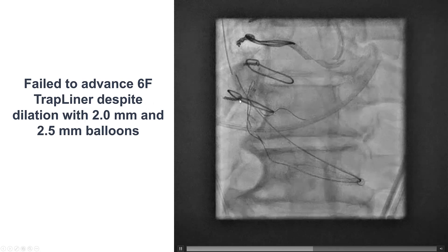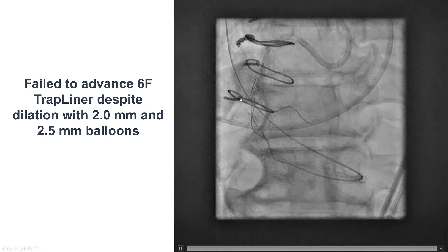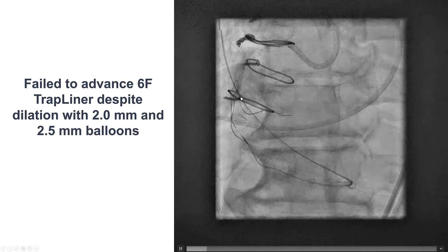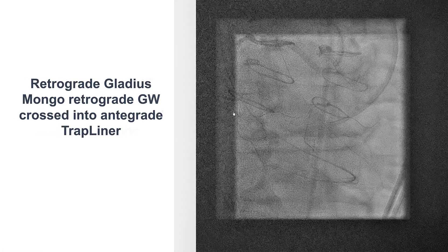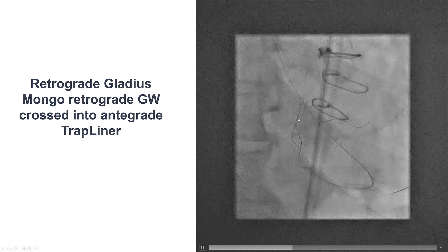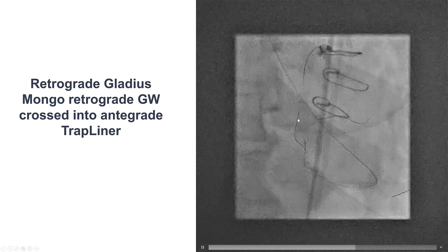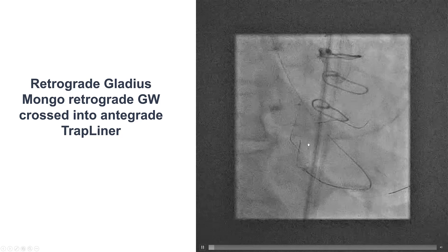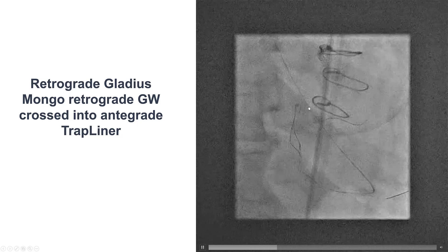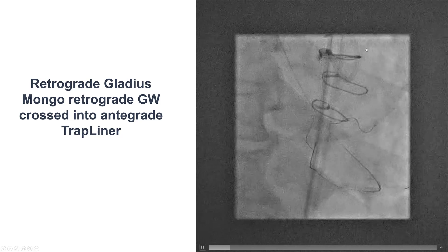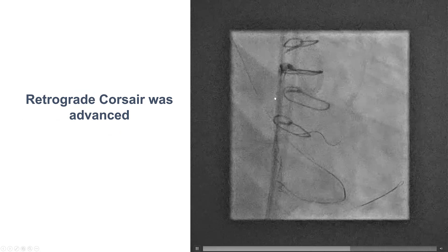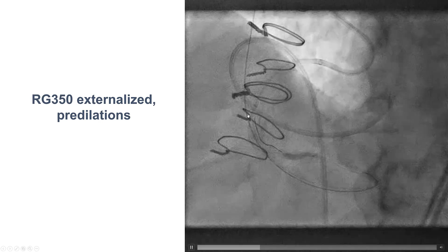However, our problems were not solved. We were unable to advance an antegrade guide extension, even after balloon dilatation of the mid-RCA with 2.0 and 2.5 mm balloons, and the lesion continued to be uncrossable with guide extensions. But eventually, we were able to advance the retrograde Gladius Mongo guide wire into the antegrade guide extension and then all the way into the antegrade guide catheter, advance the retrograde microcatheter into the guide extension, and externalize an R350 guide wire.